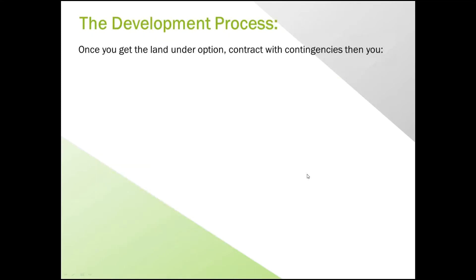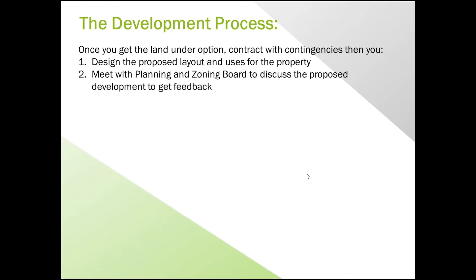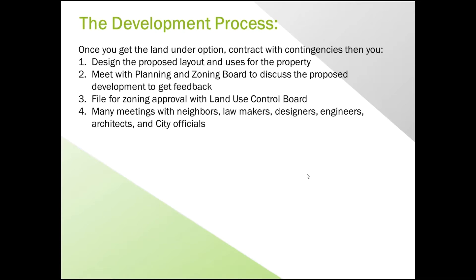Once you get your land under option or under contract, we don't like to buy ours until we know what zoning we can have. So we design the proposed layout — that's kind of a sketch — and meet with the zoning and planning board, discuss what you need to do, get your feedback, and move to the next step. You file for the zoning with the land use control board. Then you have many meetings with neighbors, lawmakers, designers, engineers, architects, and city officials — especially on a project this size — to go through the development process.